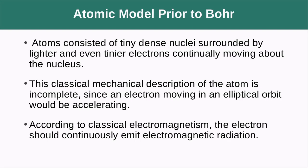What did he say? He said that atoms consisted of tiny dense nuclei surrounded by lighter and even tinier electrons continually moving around the nucleus. So we started to, we've already kind of had this idea, right?